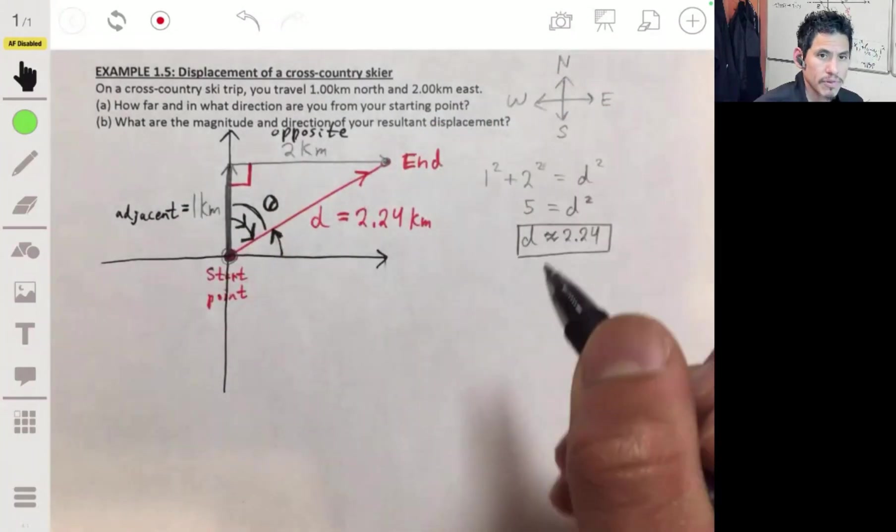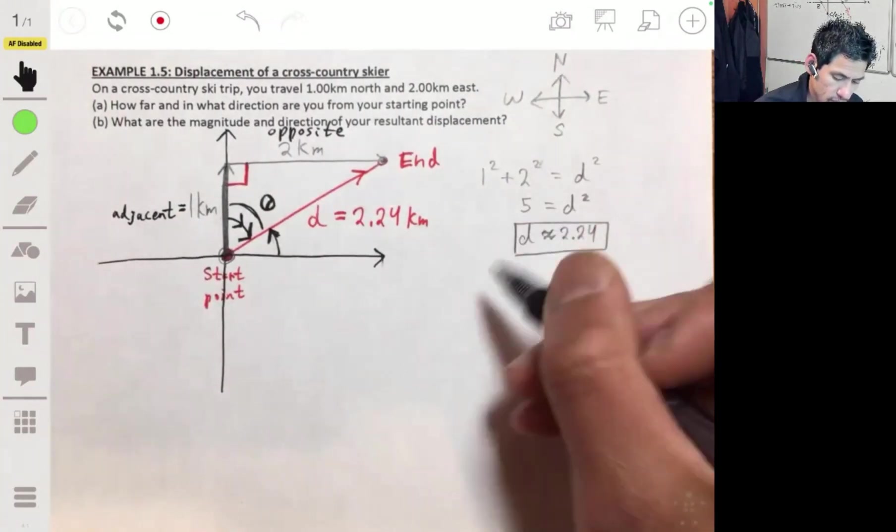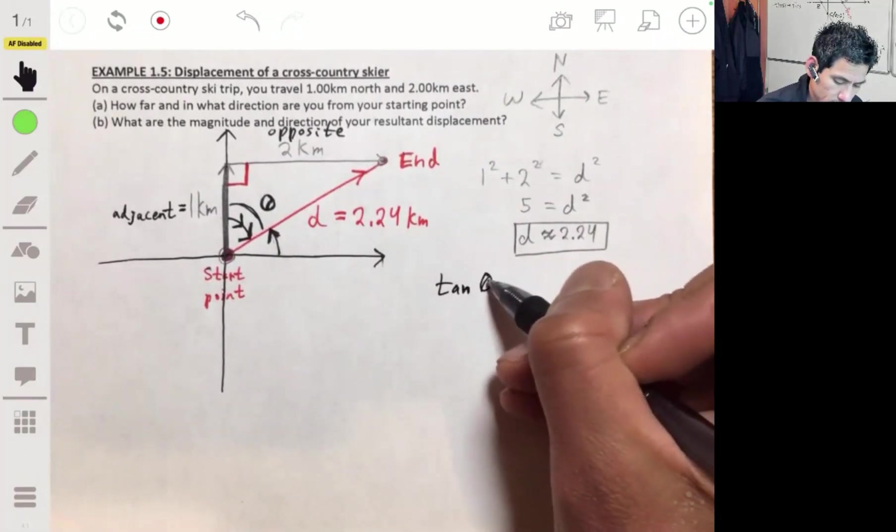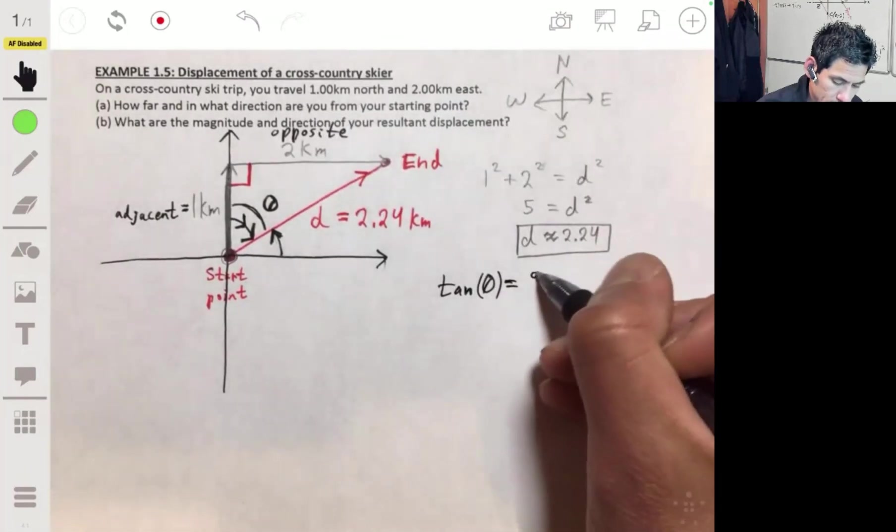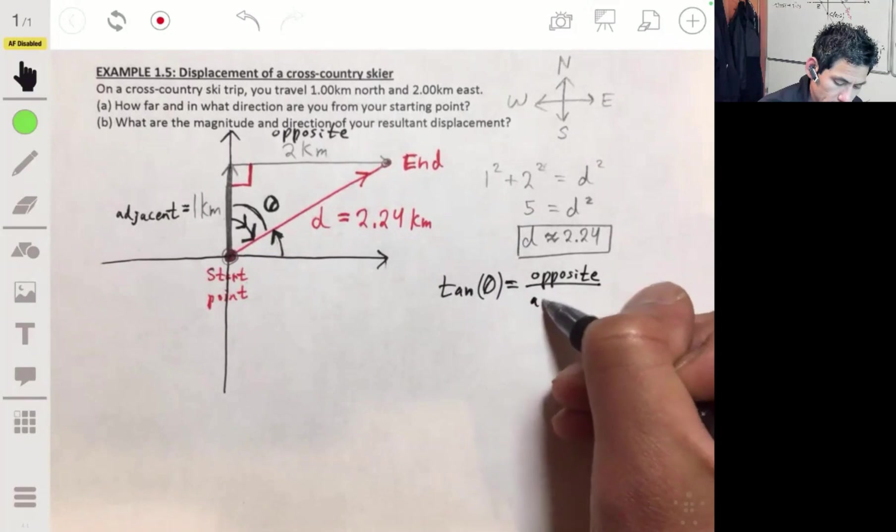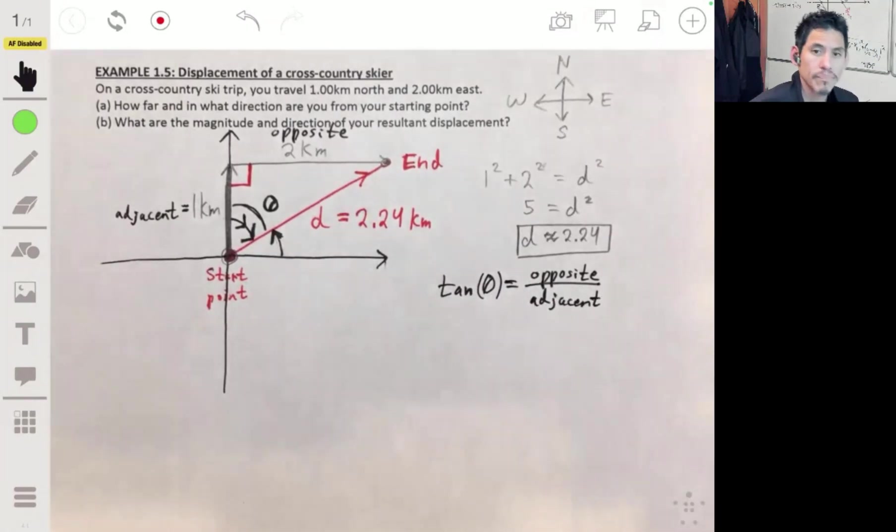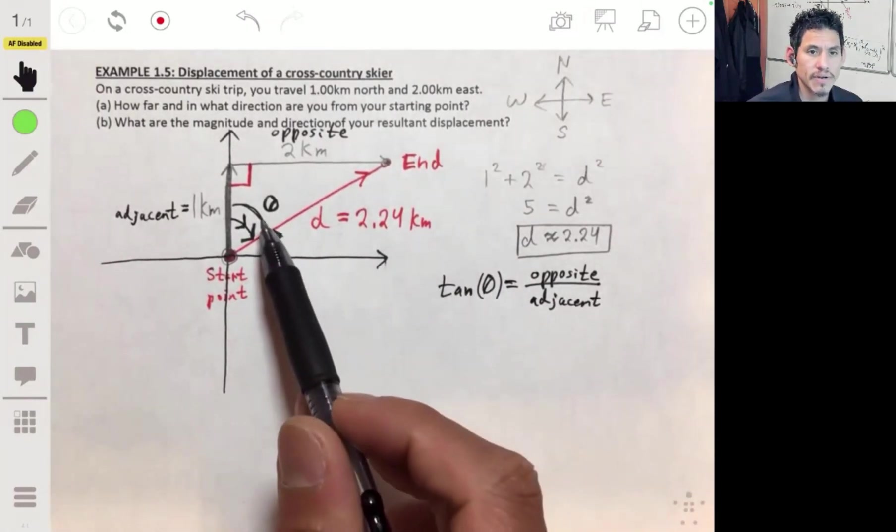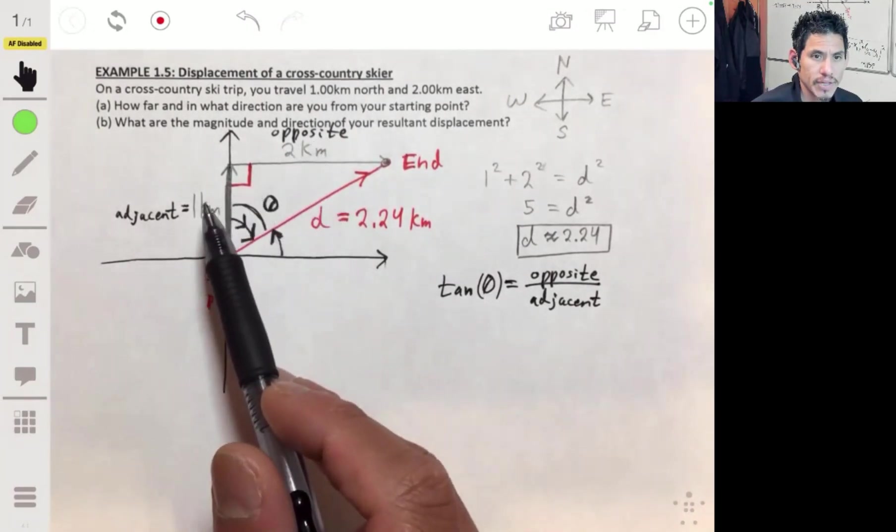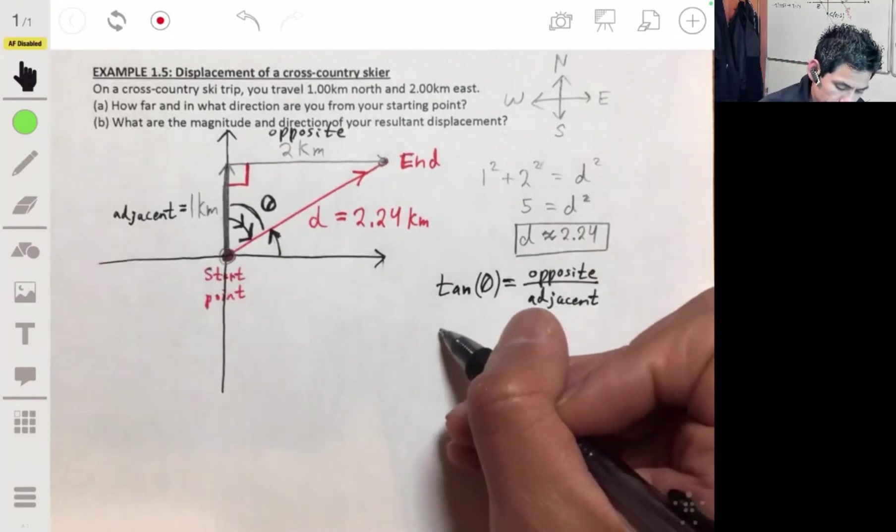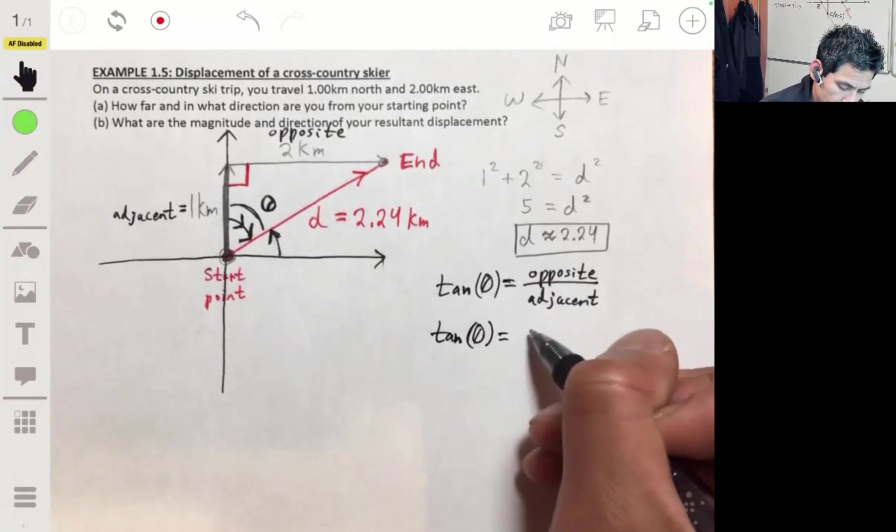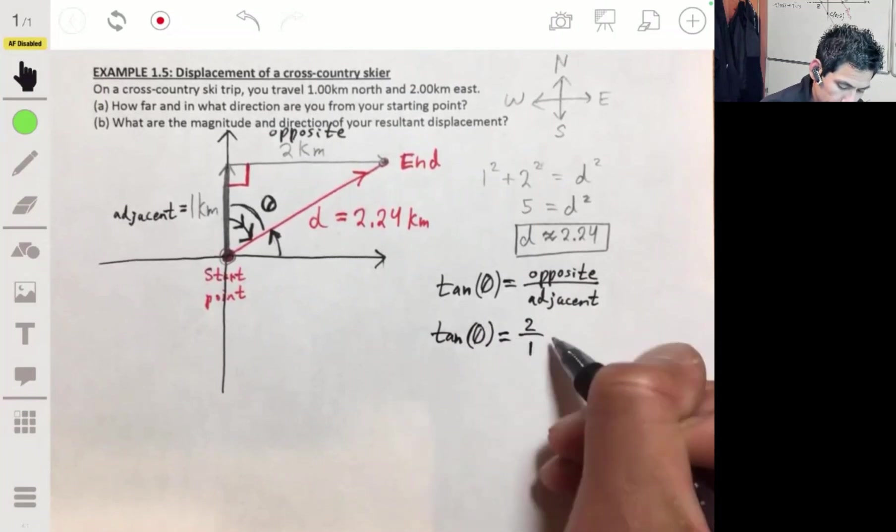So remember that the tangent function. The tangent of an angle, this angle, is equal to the opposite over the adjacent leg. So we can find the tangent of this angle by taking the opposite leg, which is two, and dividing it by the adjacent, which is one. So in this case, the tangent of theta will be two over one, or just two.